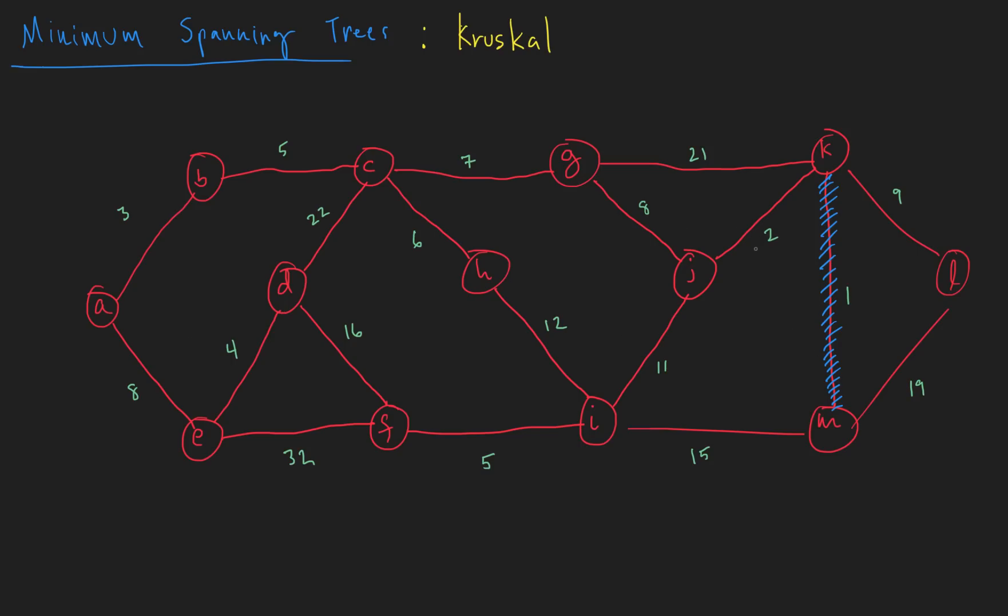The next one would be two, which is right here. So let's add that one to the tree. And so far we're good. We haven't created a cycle yet. Next would be three. Three is here, so let's add that one to the tree. Four comes next, so let's add that one to the tree.